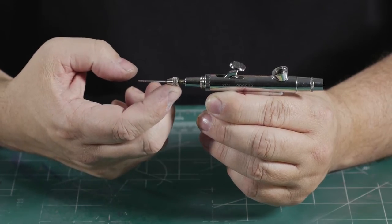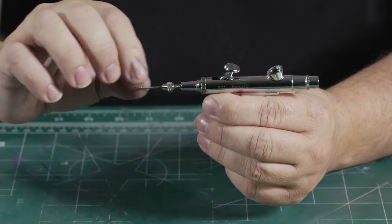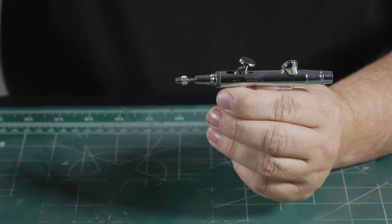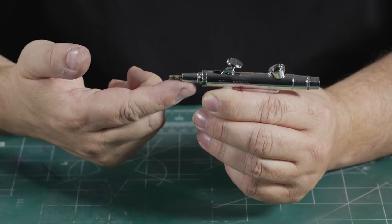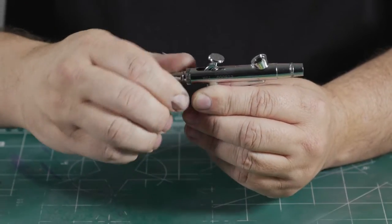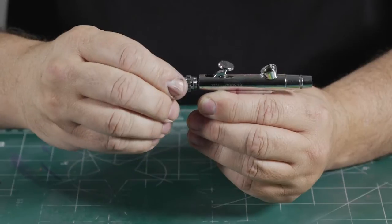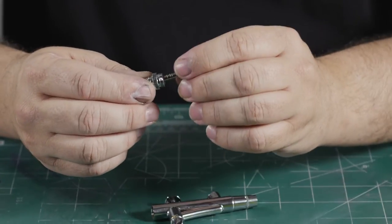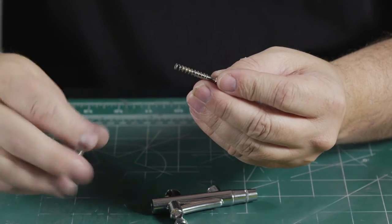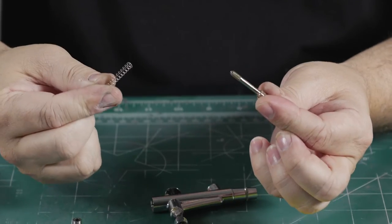We have the needle lock which we will first loosen to remove the needle. Then we'll unthread it the rest of the way. Now we have the spring housing and along with it will come the needle chuck and needle spring and they simply separate as such.